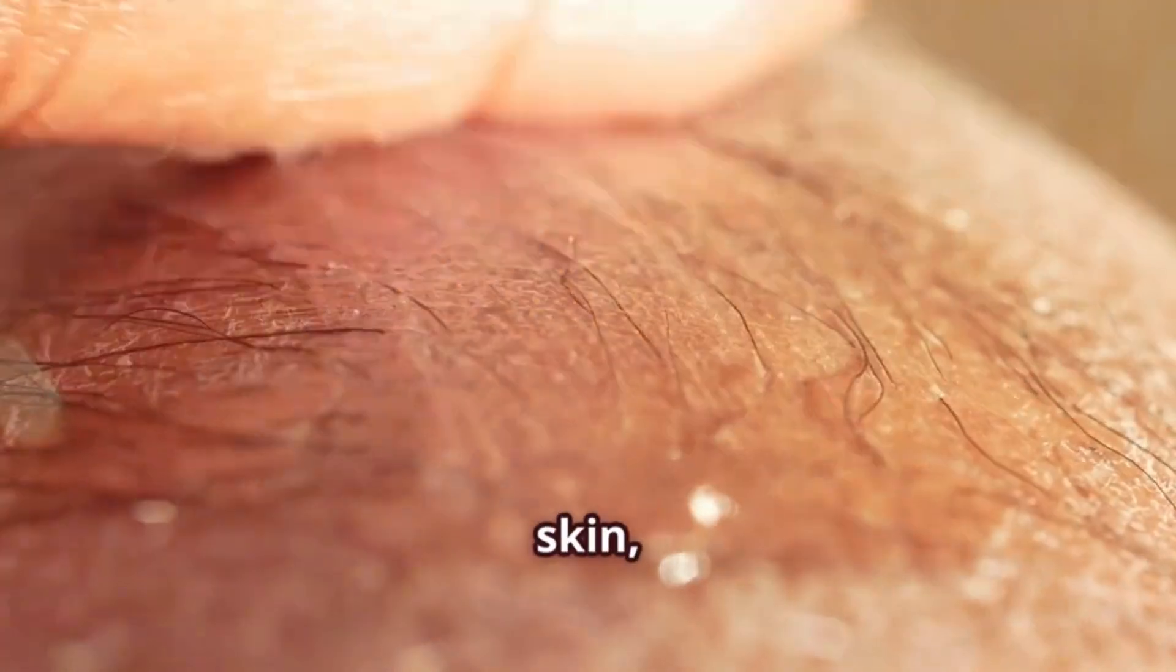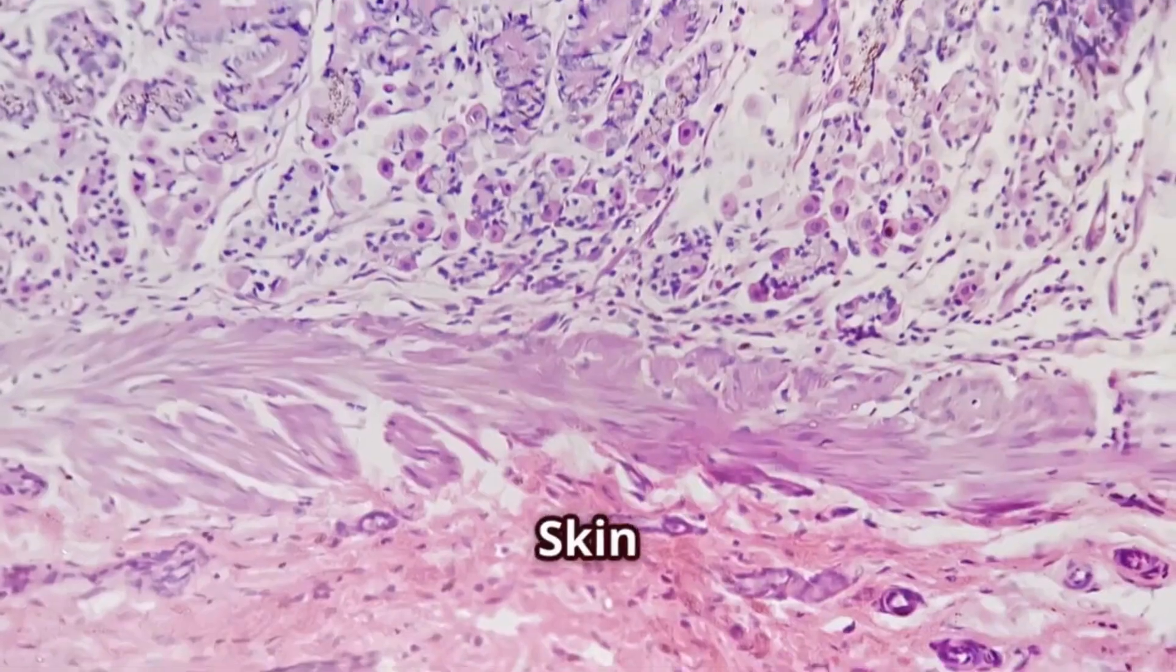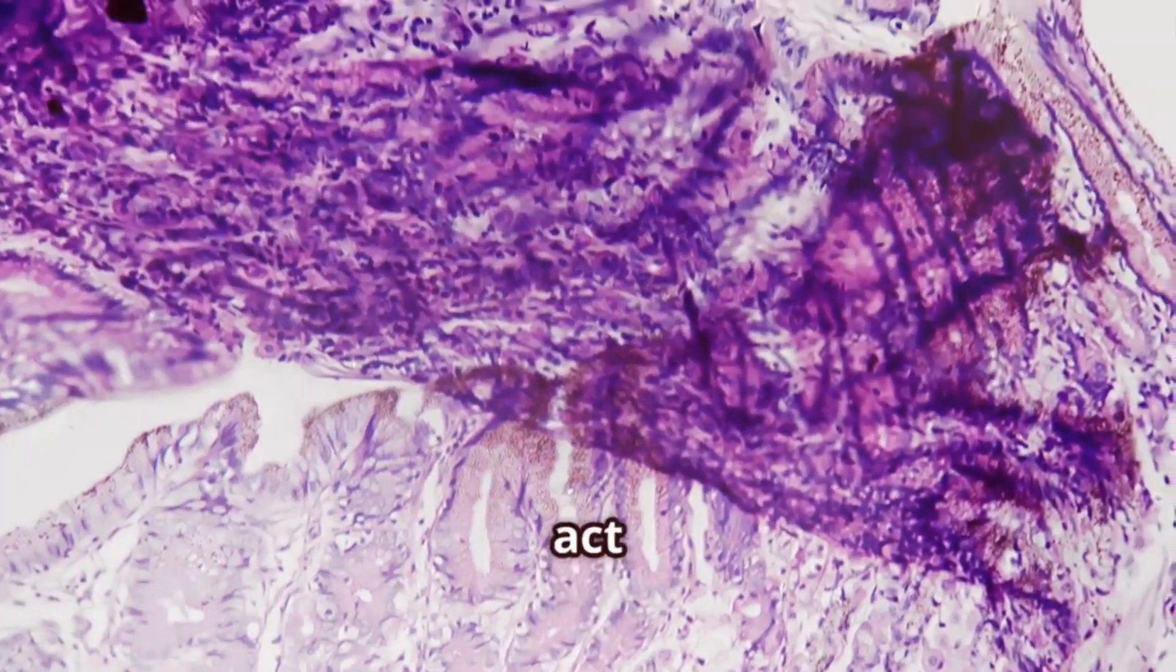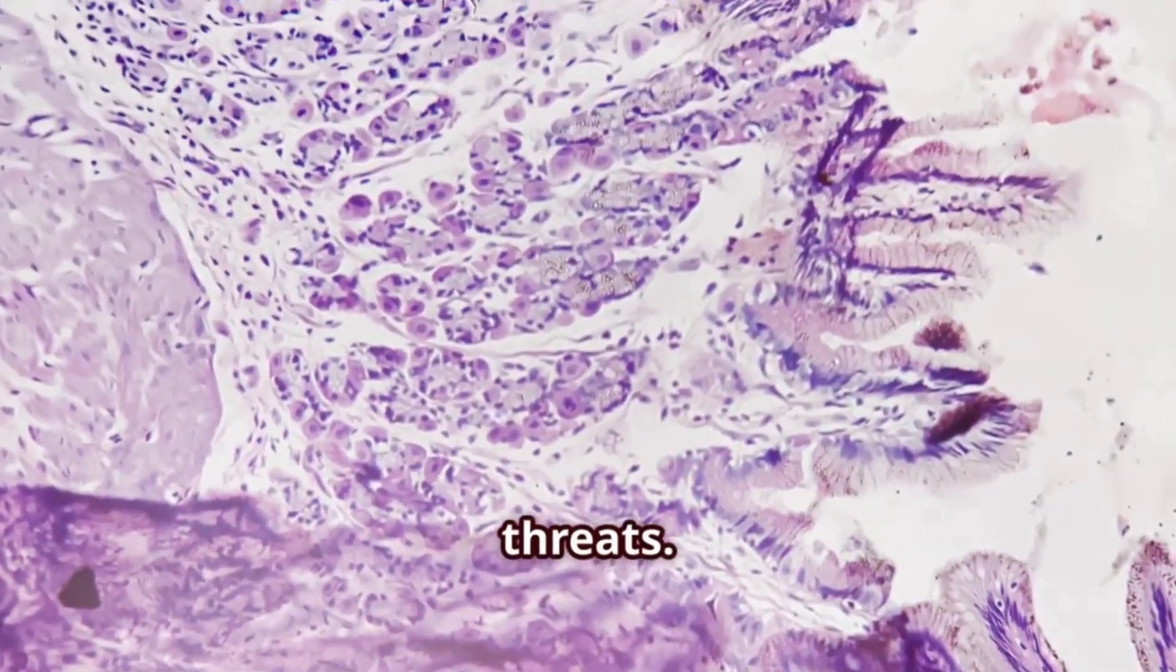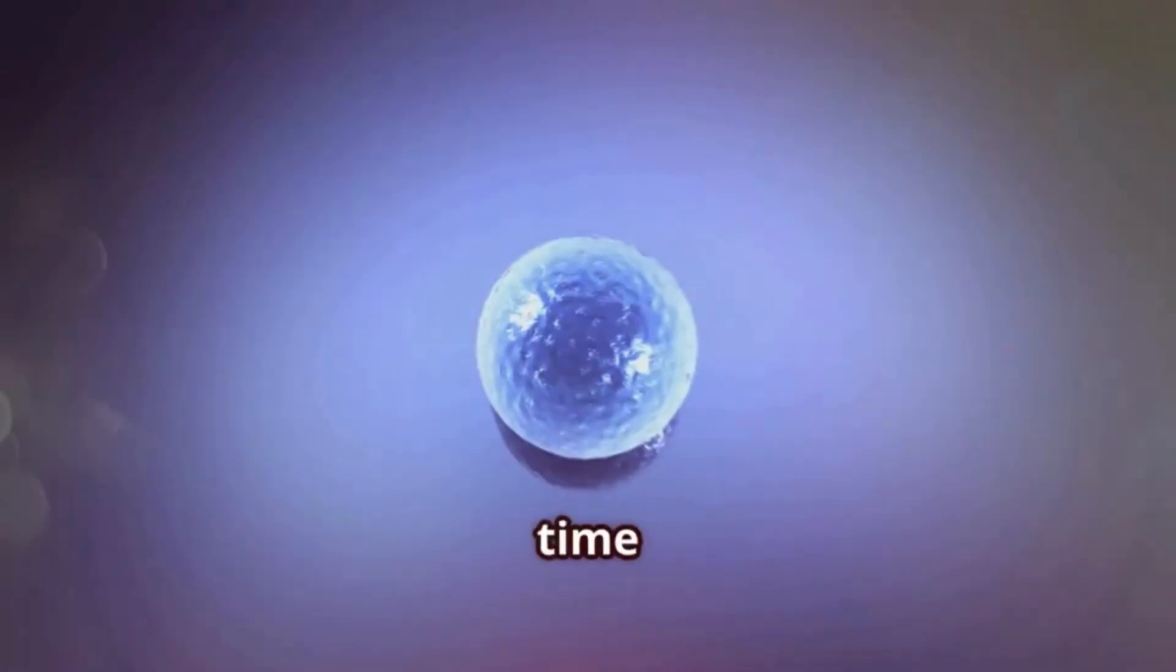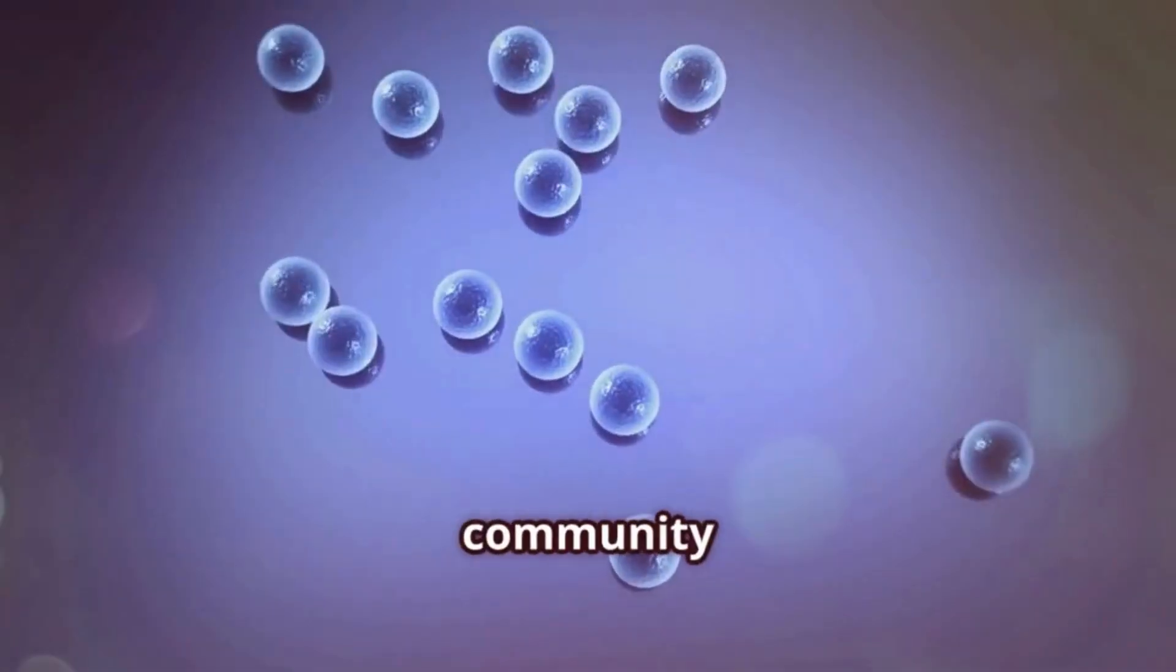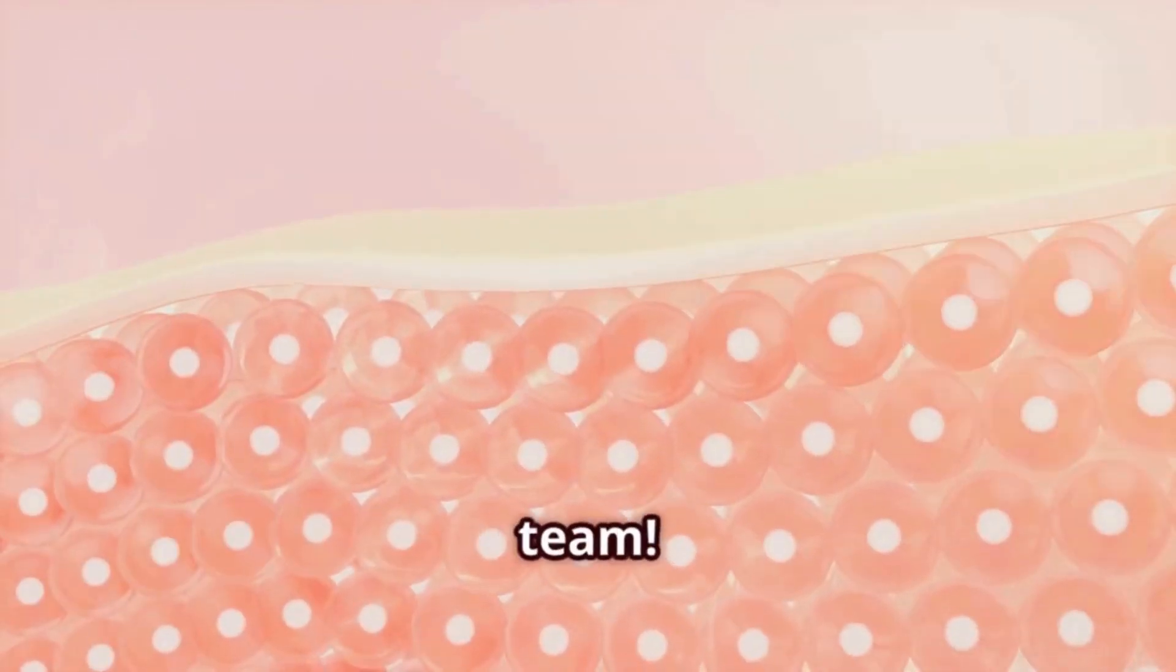Our final stop brings us to the skin—our largest organ and the first line of defense against the outside world. Skin cells are masters of protection, forming layers of tightly packed cells that act as a barrier against germs, UV radiation, and other environmental threats. These cells are constantly being produced and shed, ensuring that your skin remains a strong and effective shield. So next time you think about your skin, remember that it's not just one thing—it's a thriving community of specialized cells working together to keep you safe.